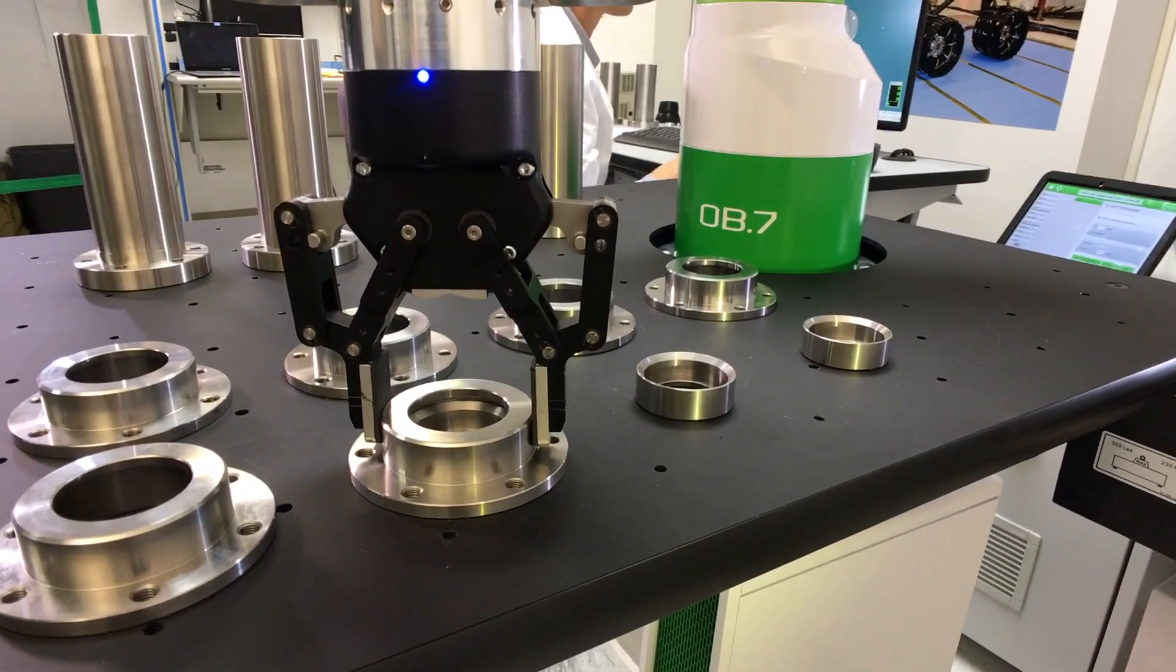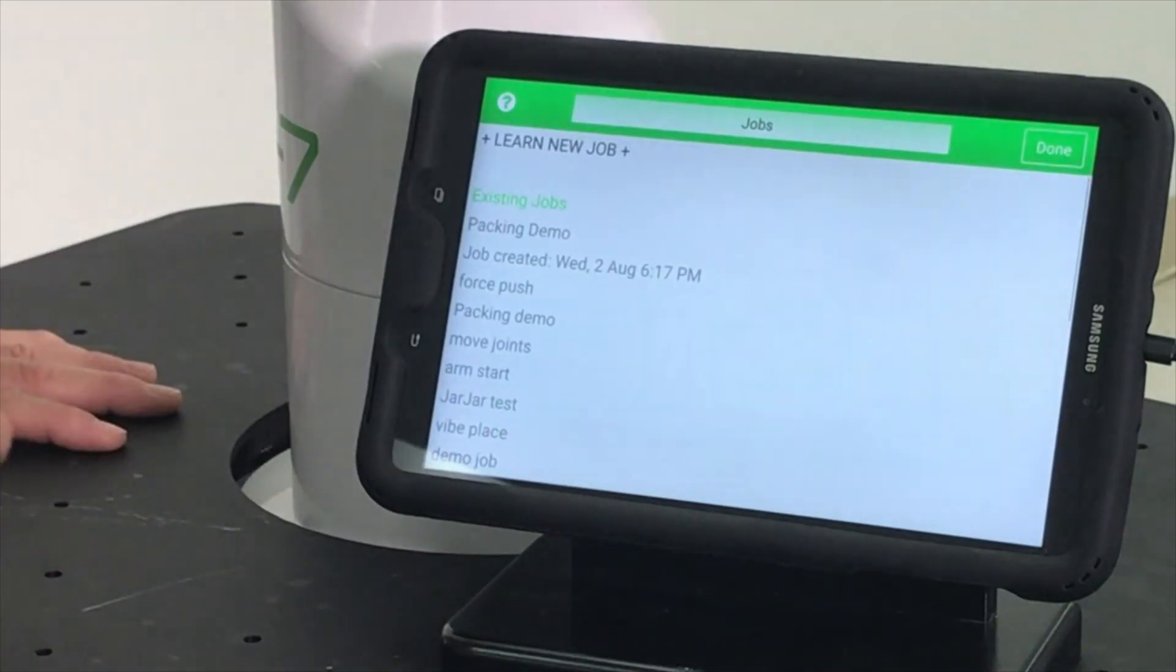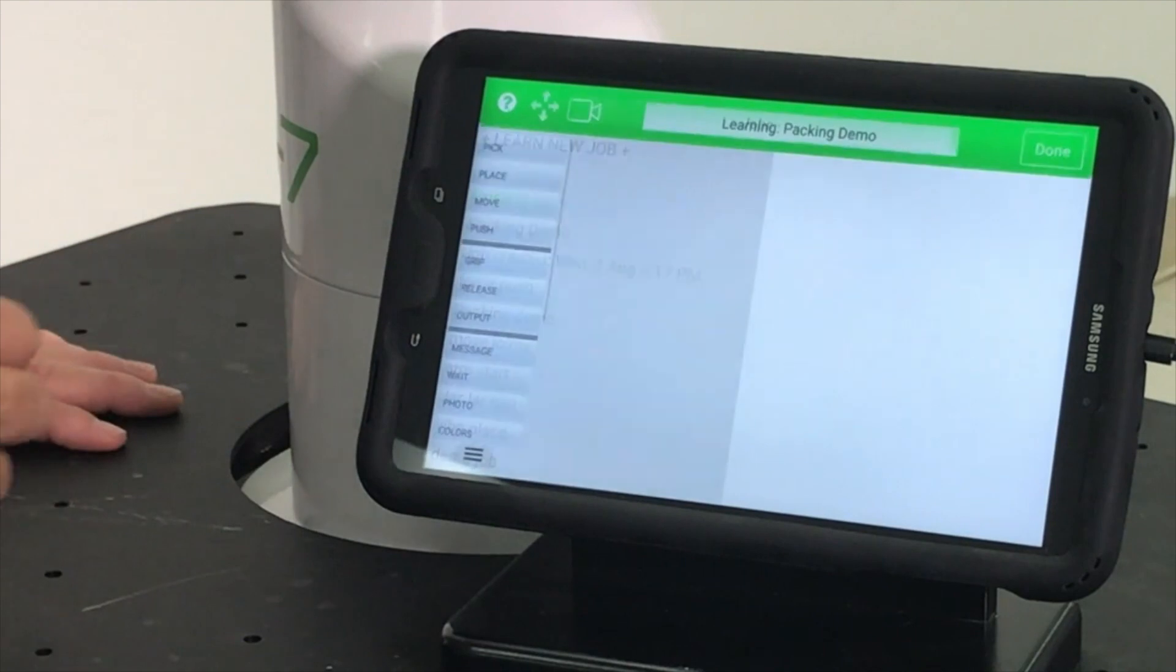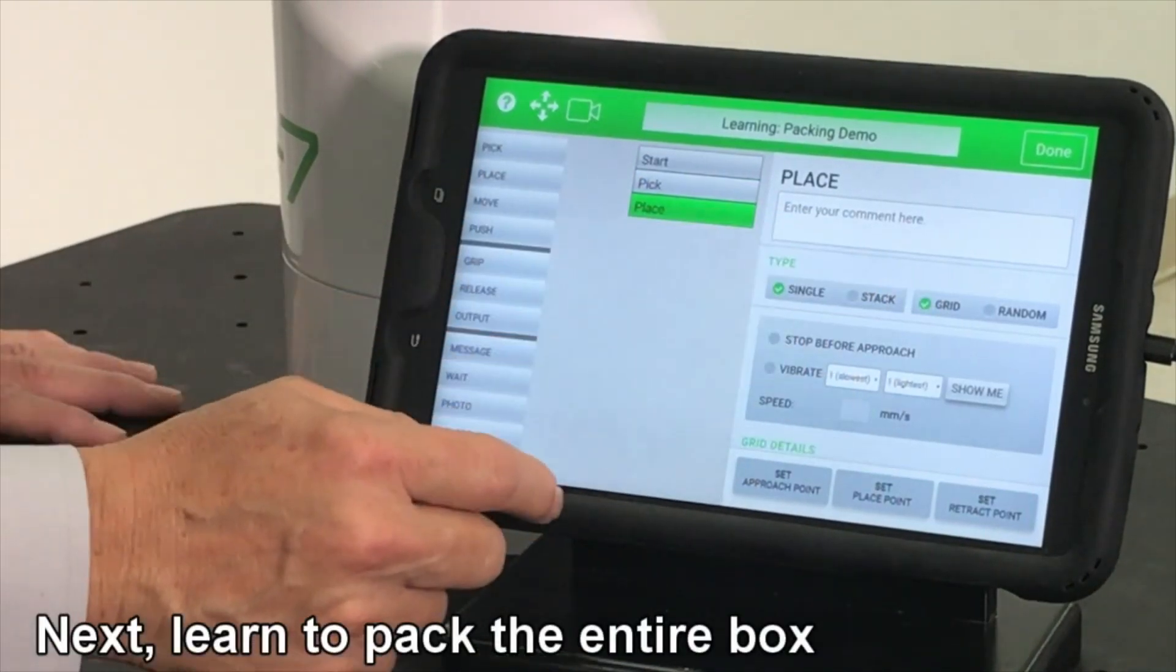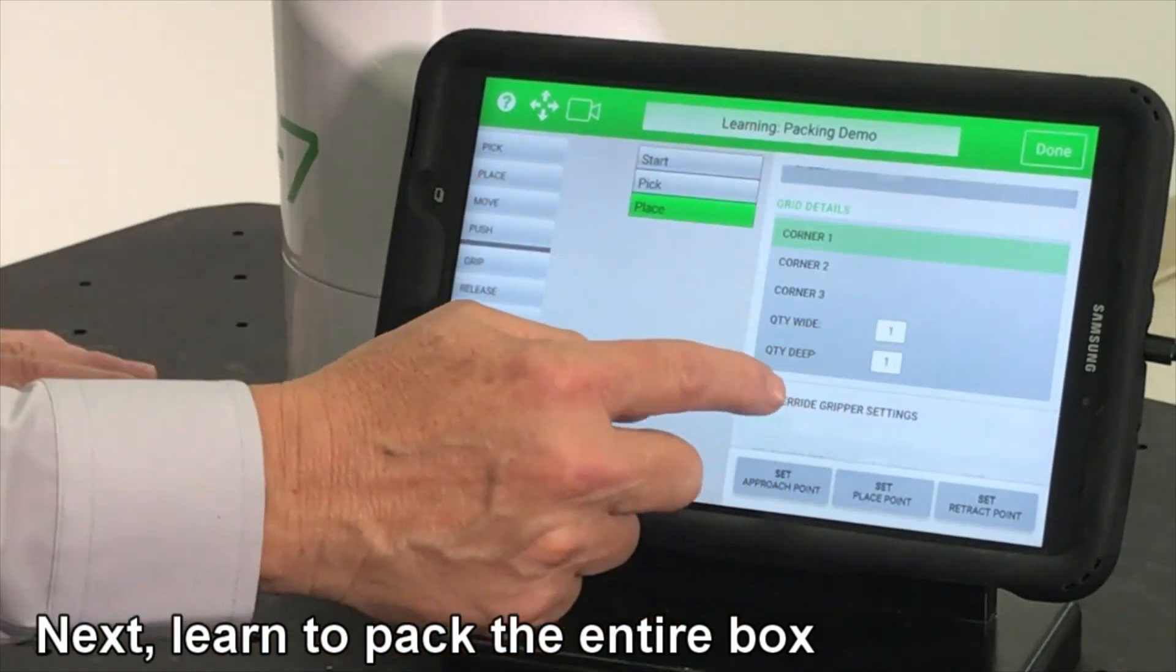There are many more powerful functions, but for now, let's teach OB7 to pack the rest of the carton. Press learn and select the packing demo again. Press the place tile. And check the grid option. Then select corner 2.